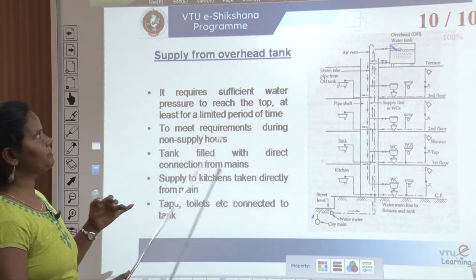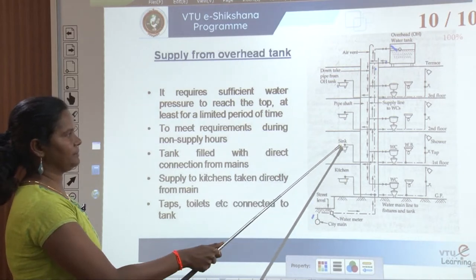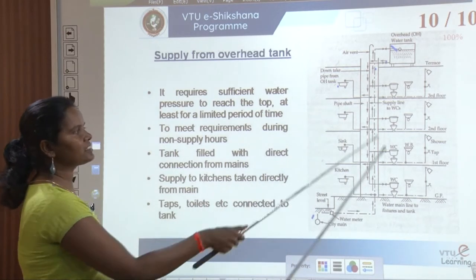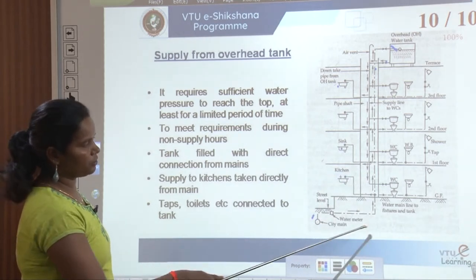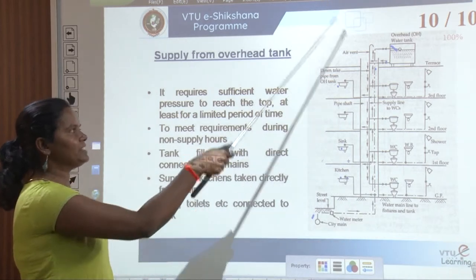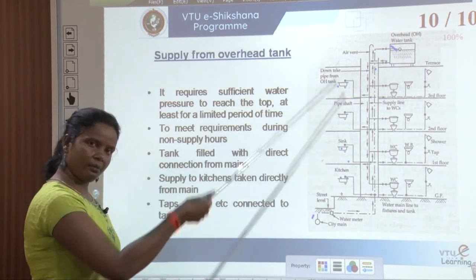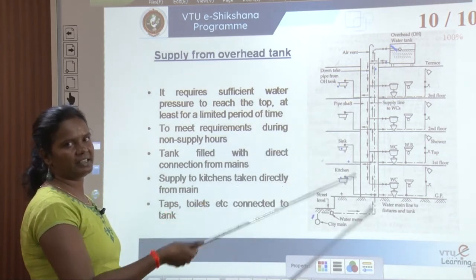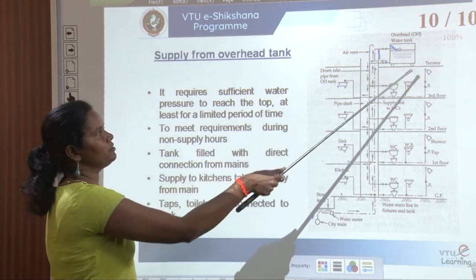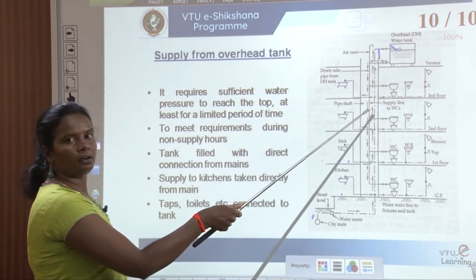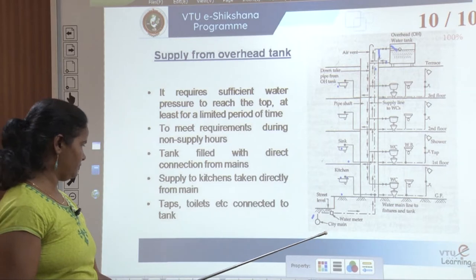In the indirect system, supply from overhead tank is a subcategory. Except for the kitchen sink — to which water is supplied directly — for all other fixtures we use water from the overhead water tank. Based on the number of floors, it is decided how far the mains can reach by pressure; otherwise the overhead water tank provides connection to the kitchen sink and all other required fixtures.